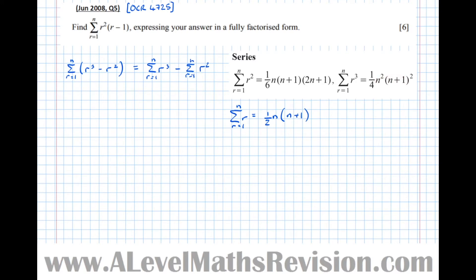Now we've got the formula for the sum of r cubed, so that becomes a quarter n squared times n plus 1 squared. We take away the formula for the sum of r squareds, which is a sixth times n times n plus 1 times 2n plus 1.